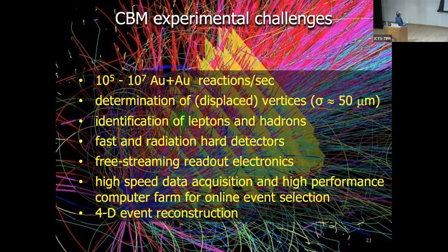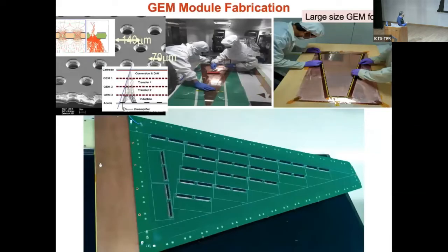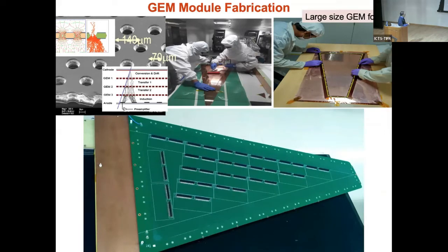The MUCH detector uses a segmented absorber with detector chambers tracking muons passing through, and a silicon detector providing momentum measurement. The inner stations must handle 400 kHz per cm² and the outer stations 130 kHz per cm². We have developed Gas Electron Multiplier — GEM — detectors at VECC, tested to work up to 3 MHz per cm². A GEM is a gaseous chamber where amplification happens in a polyimide foil of 30-50 micron thickness with 40 micron holes, 140 micron pitch — a cascade of GEMs reduces the required voltage significantly.